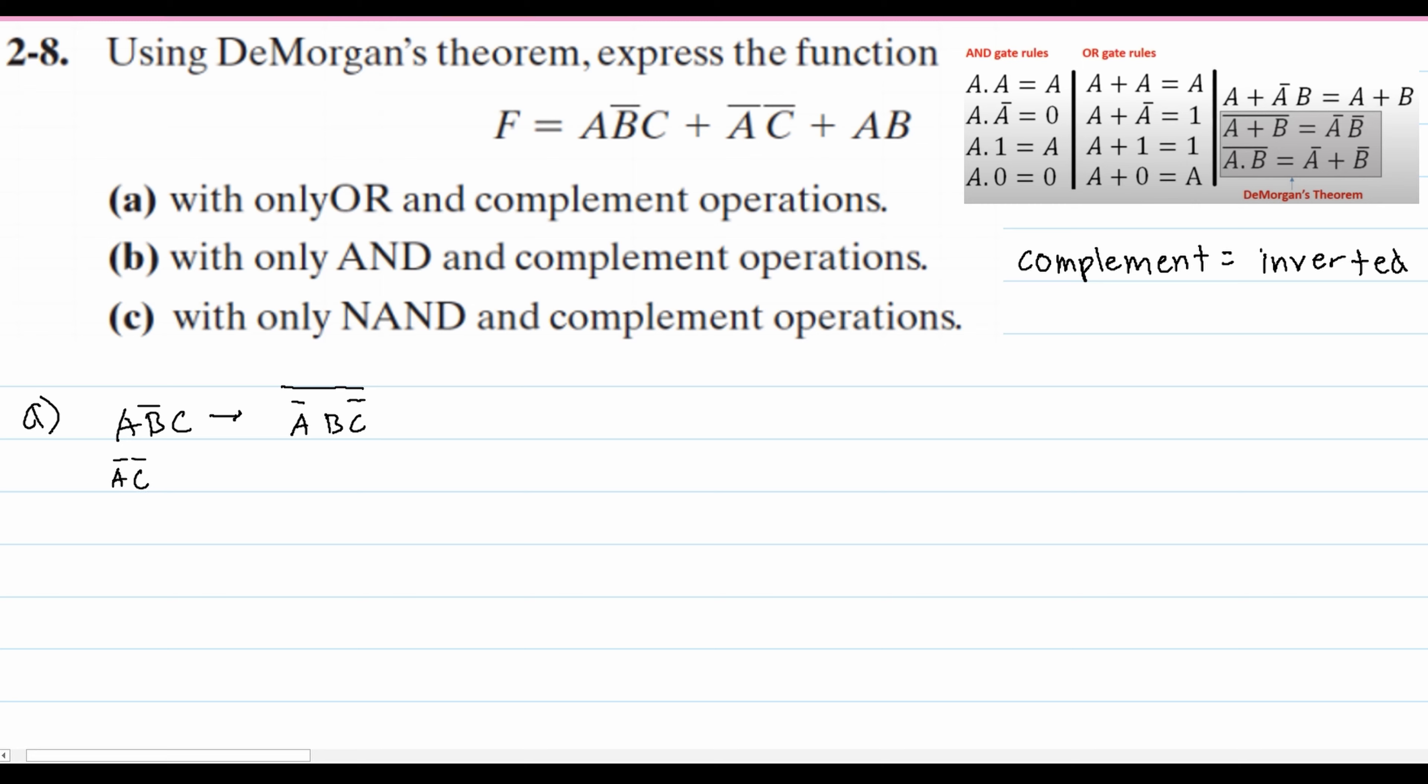Now we have this A' times C'. We can look at De Morgan's theorem, and we see that it's equal to the first one.